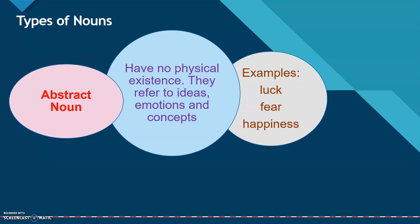Lastly, we have abstract noun. Abstract nouns have no physical existence. They refer to ideas, emotions, and concepts. For example: luck, fear, happiness. Your five physical senses cannot detect an abstract noun. You can't see it. You can't smell it. You can't taste it. You can't hear it. Or even you can't touch it.